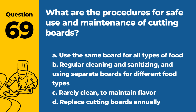Question 69. What are the procedures for safe use and maintenance of cutting boards? A. Use the same board for all types of food. B. Regular cleaning and sanitizing and using separate boards for different food types. C. Rarely clean to maintain flavor. D. Replace cutting boards annually. Answer: B. Safe use of cutting boards involves regular cleaning and sanitization and using different boards for raw meats, vegetables, and ready-to-eat foods to prevent cross-contamination.